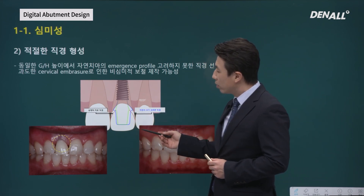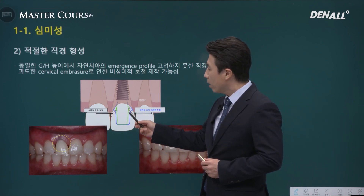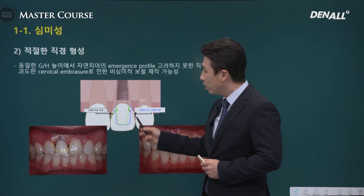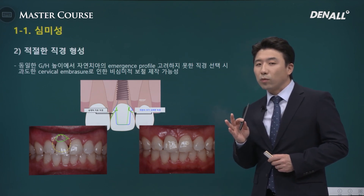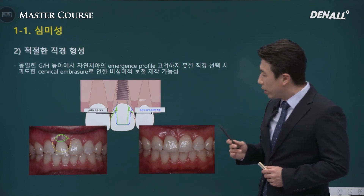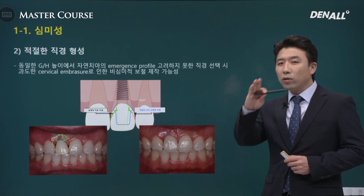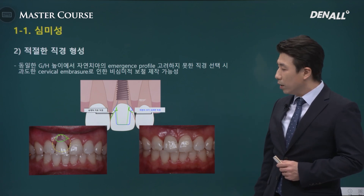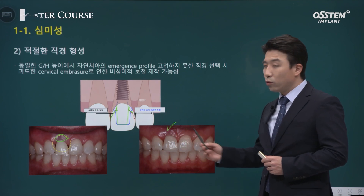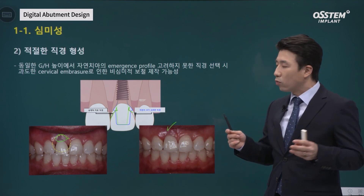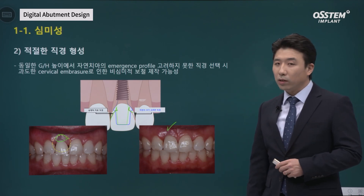Looking at the green line, the mesiodistal width is quite tight. The crown starts from here, and the cervical area looks quite unnatural. The zenith line seems to be okay, but up to the contact point, the profile looks quite unnatural. Where the width of the abutment is sufficient, it looks very natural. The abutment contour is very important, and this is emphasized repeatedly.